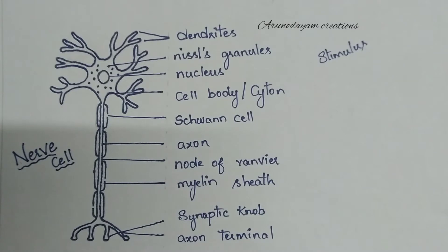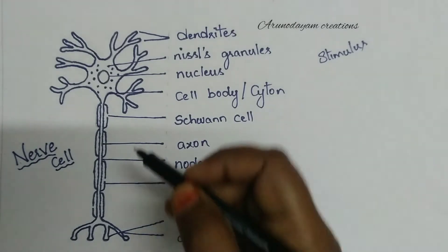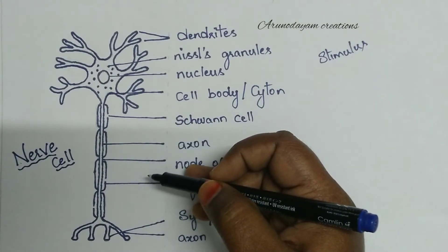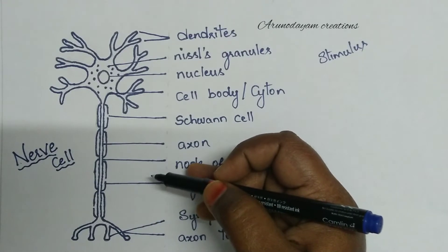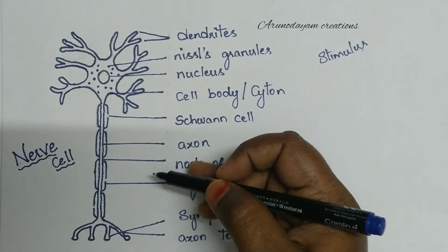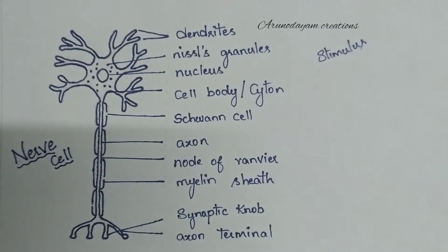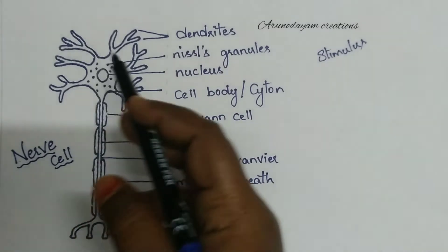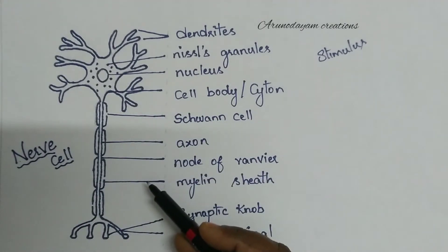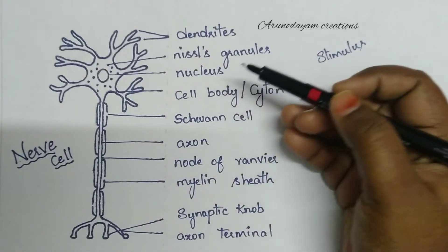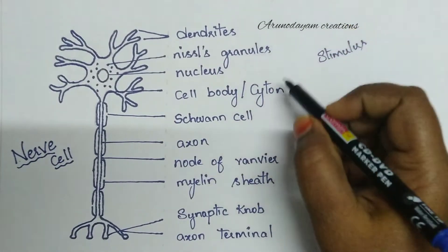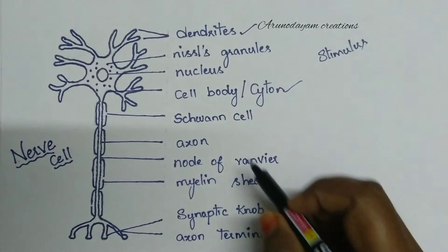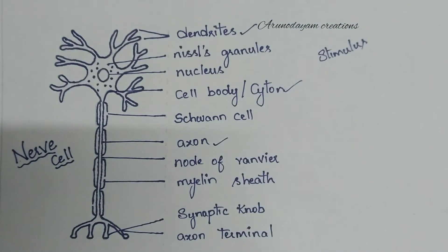Now let us see its structure. This is a nerve cell which is macroscopic in nature. Most cells present in our body are microscopic — we can observe their structure only under a microscope. But this is a macroscopic cell which is nearly 90 to 100 centimetres in length. It contains three main parts: cytone, dendrites, and axon.